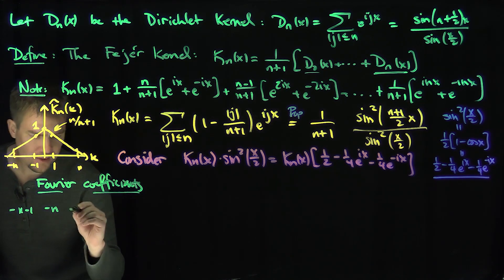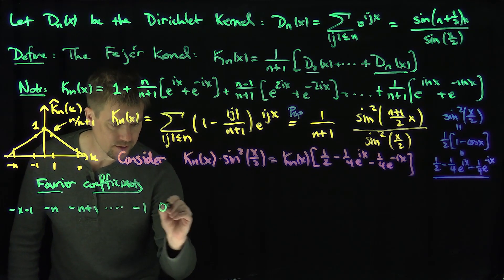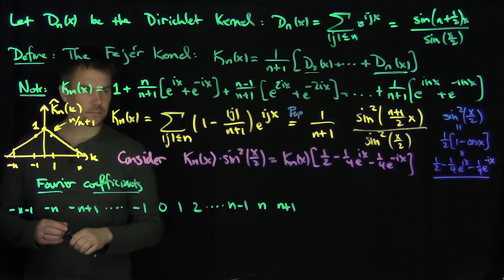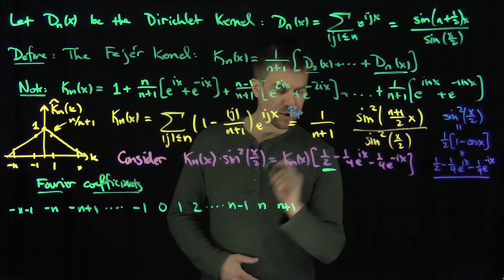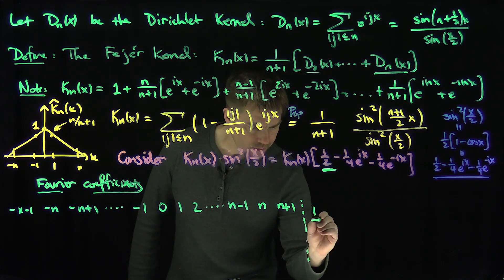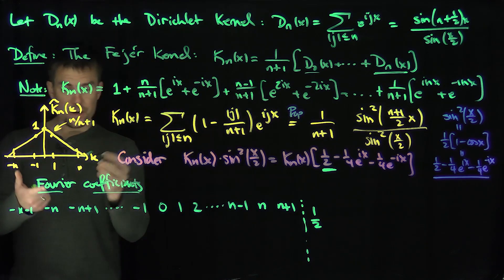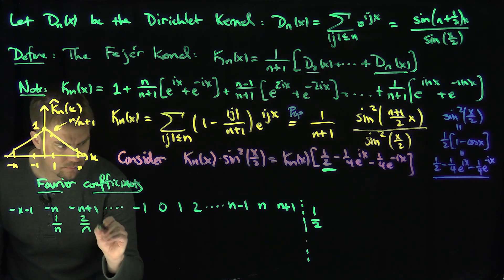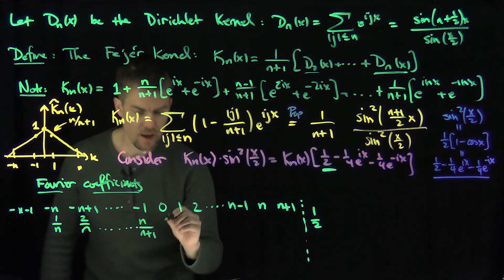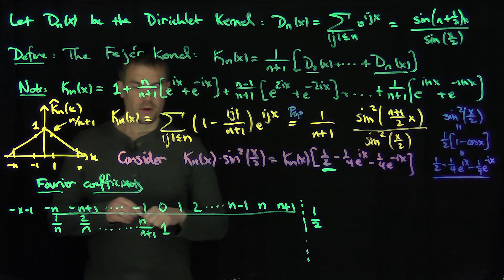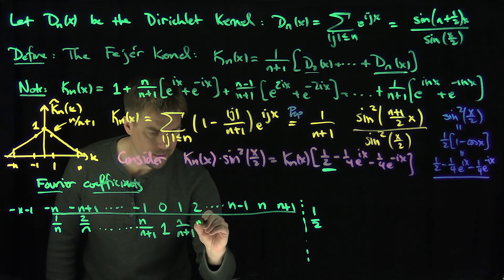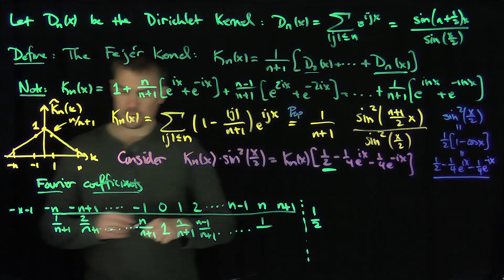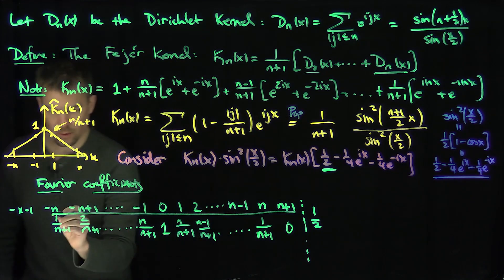Writing down the mode indices: negative (n+1), negative n, negative (n−1), all the way to negative 1, 0, 1, 2, all the way to (n−1), n, and (n+1). The ordinary Fejér coefficients go triangularly: at negative n you have 1 over (n+1), then 2 over (n+1), all the way up to the mode of 1 at index 0, then n over (n+1), and then (n−1) over (n+1), all the way down to 1 over (n+1), with 0 at negative (n+1) and at (n+1).